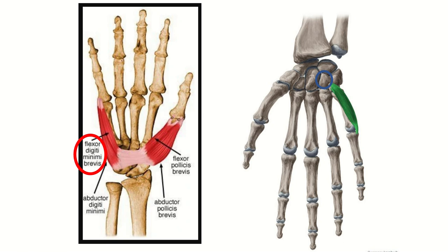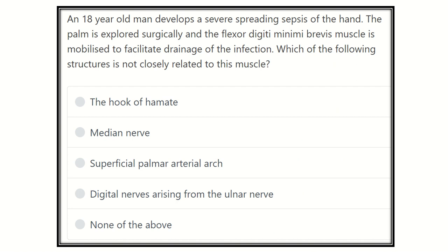Welcome to another question and answer session for the MRCS exam. An 18-year-old man develops a severe spreading sepsis of the hand. The palm is explored surgically and the flexor digiti minimi brevis muscle is mobilized to facilitate drainage of the infection. Which of the following structures is NOT closely related to this muscle?